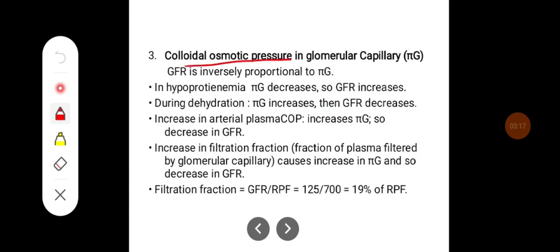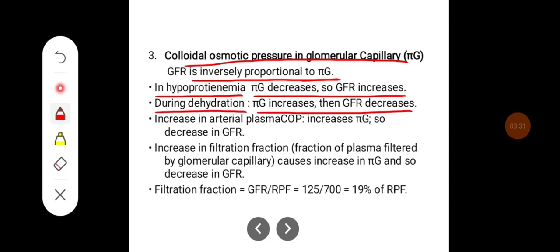GFR is inversely proportional to the oncotic pressure in the glomerular capillary. In hypoproteinemia, pi G decreases so GFR increases. During dehydration, pi G increases so GFR decreases. An increase in arterial plasma oncotic pressure also increases the oncotic pressure and therefore decreases GFR.